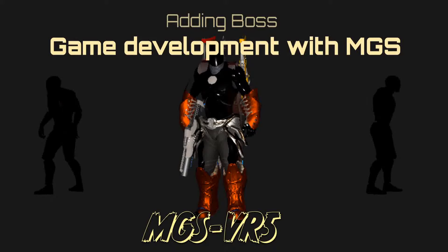Hello and welcome to an Unreal Engine 5 tutorial. In this one we will be adding a boss. We will do two different methods: the first one is the traditional way where you bring a character mesh, import it, and add it to your enemy AI. The other one is if you already have a character somewhere else that's already programmed, has a blueprint and an MVP, so it would be annoying to destroy everything and start from scratch.